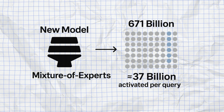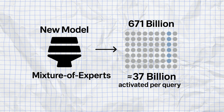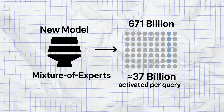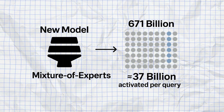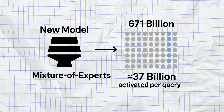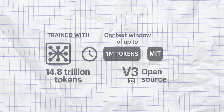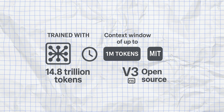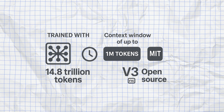Before we dive into the details, let's take a moment to understand what DeepSeek V3.1 actually is. This new model is based on a mixture-of-experts architecture with a total of 671 billion parameters. However, only about 37 billion are activated per query — an efficient method to optimize computing power while delivering impressive results. The model was trained with 14.8 trillion tokens and offers a context window of up to 1 million tokens, a significant advancement compared to previous versions.